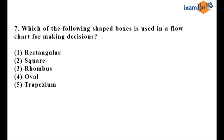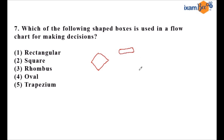Question seven asks: which shaped box is used in a flowchart for making decisions? Decisions are made using a rhombus box. The oval/rounded box is used for start or end, and the rectangle is used for a process step.